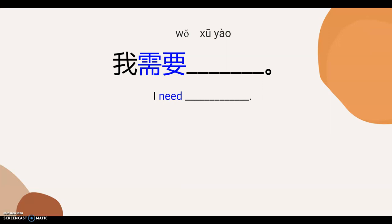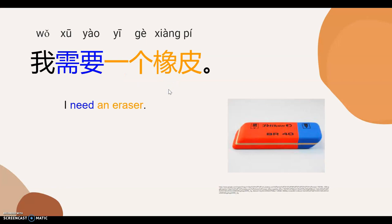The first sentence pattern I want to introduce is 'I need.' 我需要。 Now it's your turn to say 'I need.' 我需要。 Now I want you to recall how to say 'an eraser.' 一个橡皮。 And then how to say 'I need.' 我需要。 So, how to say 'I need an eraser.' 我需要一个橡皮。